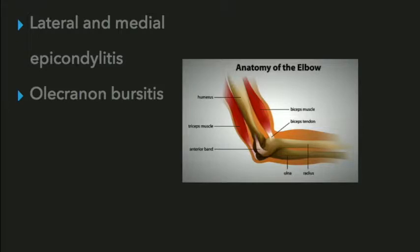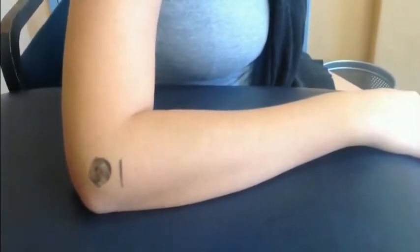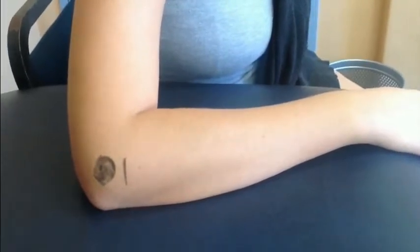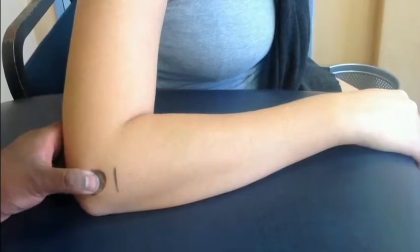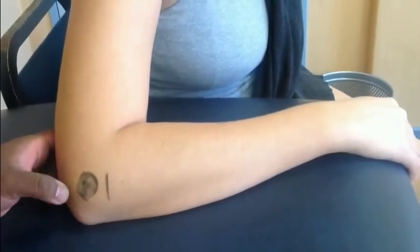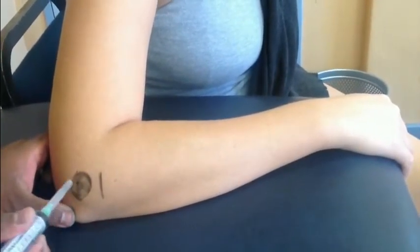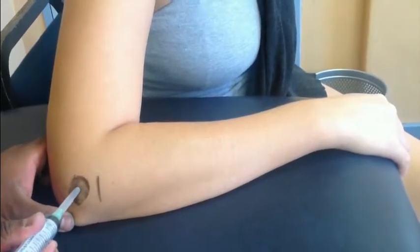Lateral and medial epicondylitis and olecranon bursitis are conditions of the elbow for which you may consider intra-articular injections. We'll be talking about lateral epicondylitis, commonly known as tennis elbow, as an example. The patient is asked to flex the elbow and you palpate the lateral epicondyle. In a patient with lateral epicondylitis, you feel the area of maximal tenderness, and then with your needle almost perpendicular to that point, you inject.